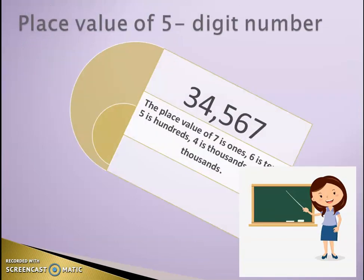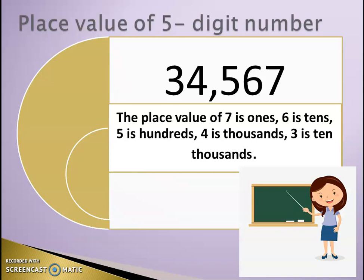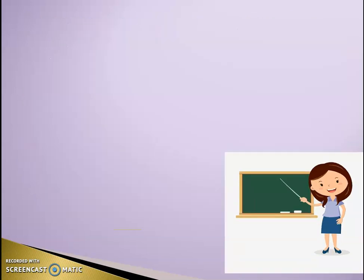Another example. In this example, the place value of 7 is ones, 6 is tens, 5 is hundreds, 4 is thousands, and 3 is ten thousands.